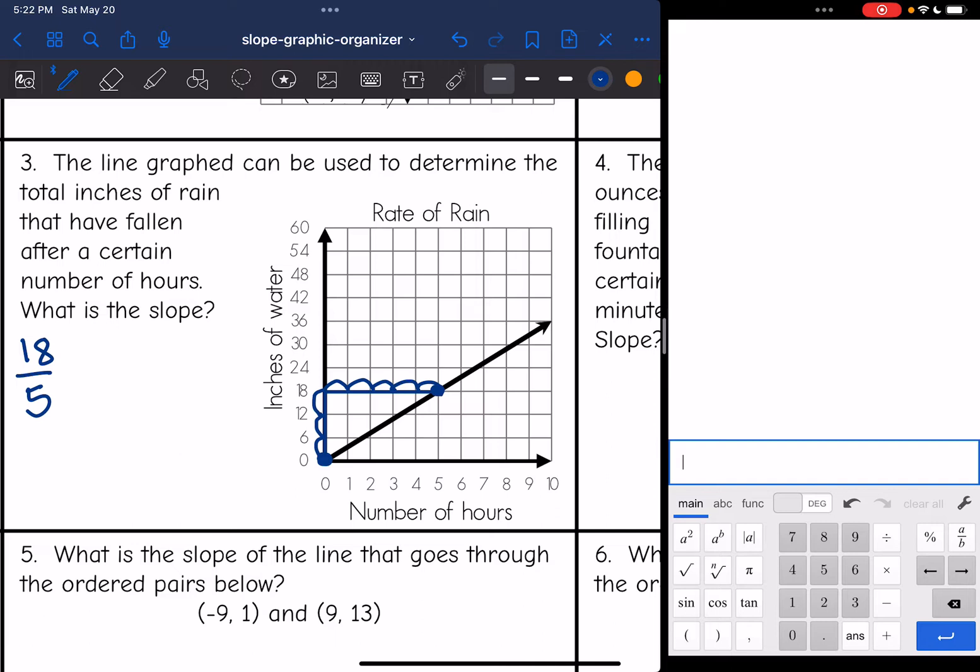Now I'm going to change this one to a decimal because when we're talking about how much it's raining per hour, we wouldn't usually say 18 fifth inches per hour. We'd probably say that as a decimal. So 18 divided by five is 3.6. So the slope here would be 3.6, and that would represent 3.6 inches per hour.